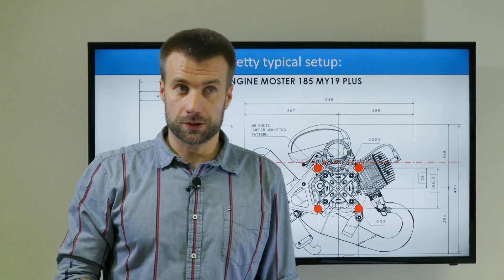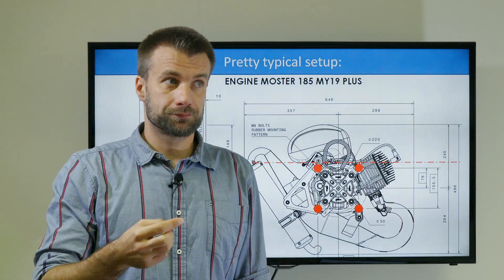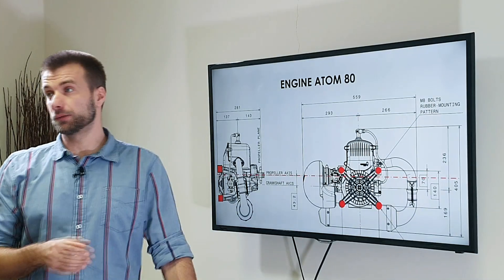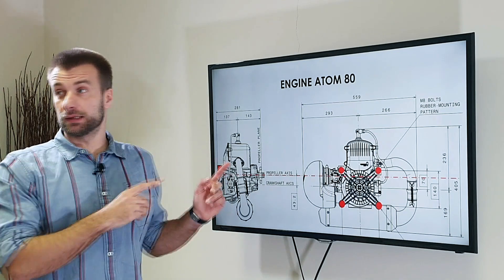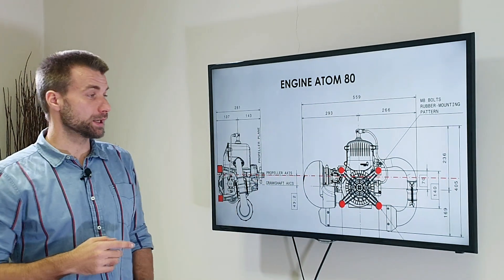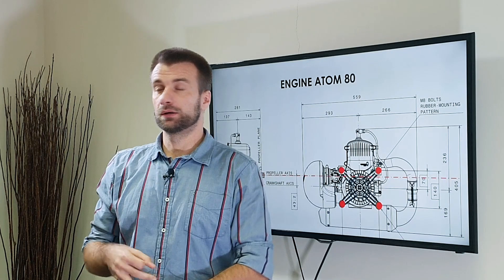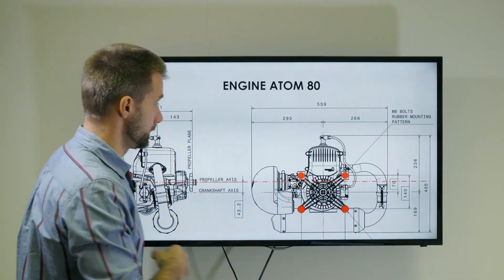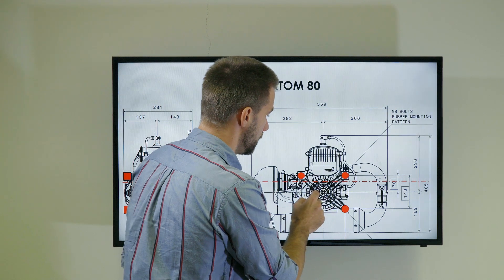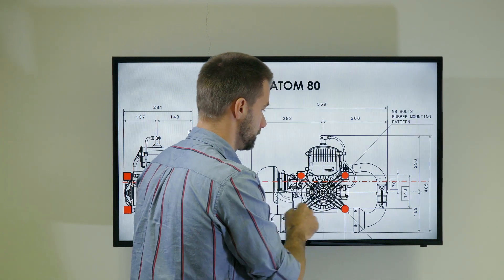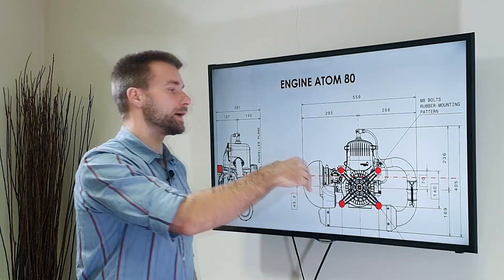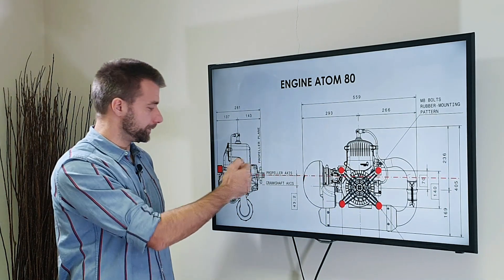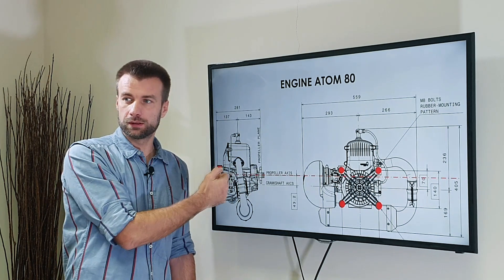How about small engines? They made it better. It's probably just a coincidence. Here is the Vitorazzi Atom 80. But again, they are not alone in this category. Also, the Top 80 or other engines, they pretty much use the same concept. So basically, here we have a shaft, and they build the engine mounts around the shaft symmetrically. And it's just a coincidence that the propeller axis happens to be in between the engine mounts.